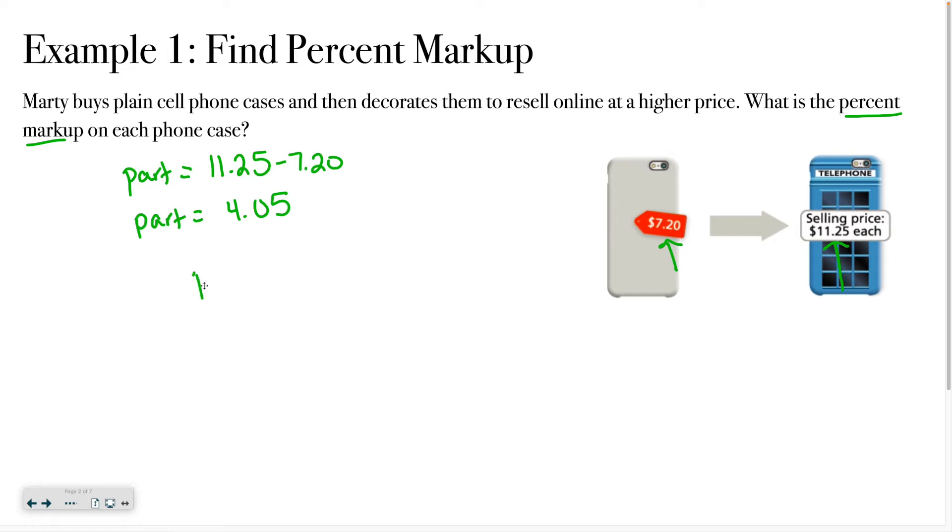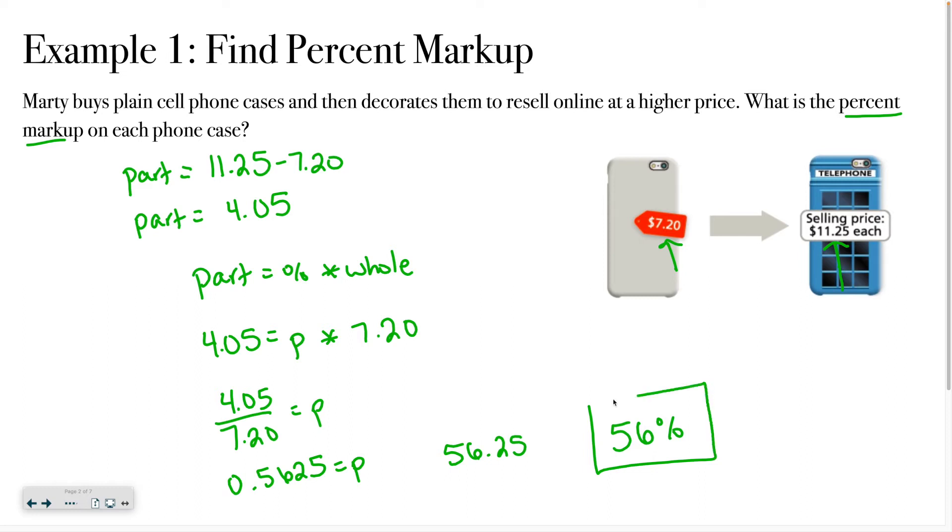As we did yesterday, I'm looking for that percent markup, basically that percent increase. So I'm going to use that part equals percent times whole. My part is $4.05, I don't know my percent, but my whole would be how much it originally costs, $7.20. And then I'm going to divide by 720. When I do that, I get 0.5625 equals P. So if I round that to the nearest percent, 56.25% is going to round to 56%. So the percent markup is going to be 56%.